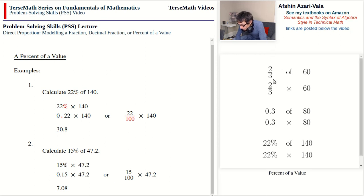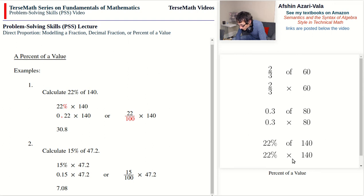To summarize: if we are trying to find a fraction of a value such as 2/3 of 60, we multiply 2/3 by 60. If we are finding a decimal fraction of a value such as 0.3 of 80, we multiply the decimal fraction by the value. For a percentage, 22% of 140 becomes 22% times 140. This key skill will be used over and over in the next few videos. Thank you for watching and I'll see you in the next one.